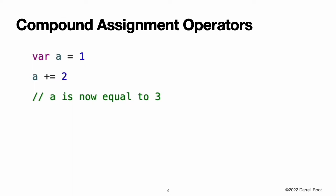Compound assignment operators. Like C, Swift provides compound assignment operators that combine assignment with another operation. One example is the addition assignment operator. The expression a += 2 is shorthand for a equals a plus 2. Effectively, the addition and the assignment are combined into one operator that performs both tasks at the same time. Note: the compound assignment operators do not return a value. For example, you cannot write let b equals a += 2. For information about the operators provided by the Swift Standard Library, see Operator Declarations.